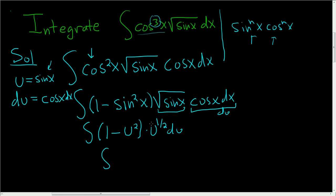Let's clean this up. So distributing the u to the 1 half, we get u to the 1 half minus u to the 5 halves du, right? Because if you add 2 plus 1 half, that's really 2 and 1 half, which is 5 halves.